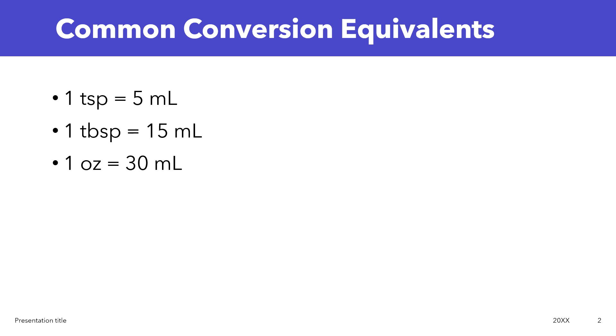The first one: one teaspoon is 5 ml, one tablespoon is 15 ml, and one ounce is 30 ml.